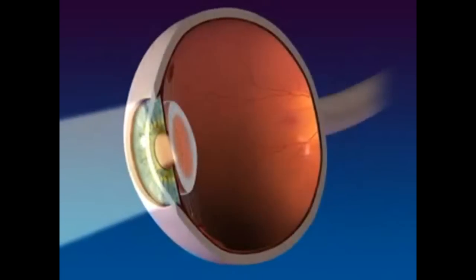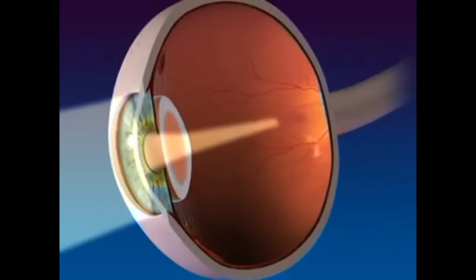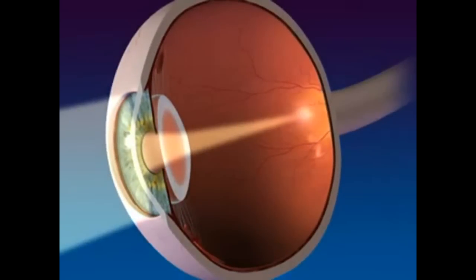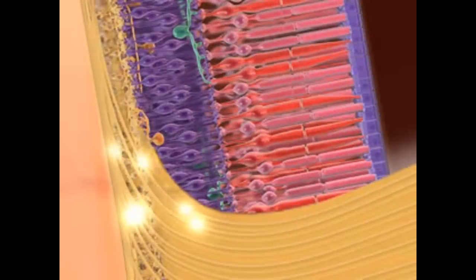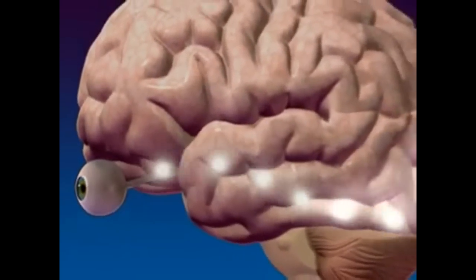Light rays enter the eye through the cornea, pupil, and lens, where the light rays are bent or refracted to focus them on the rods and cones, which transmit the stimulus to the optic nerve and then to the occipital lobe of the brain for interpretation.